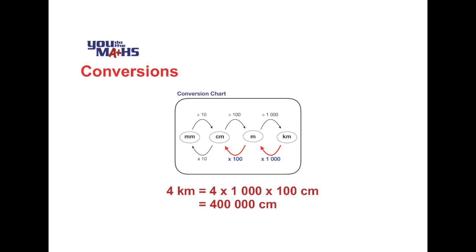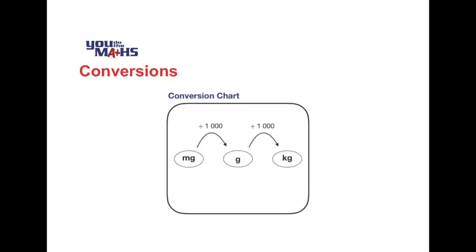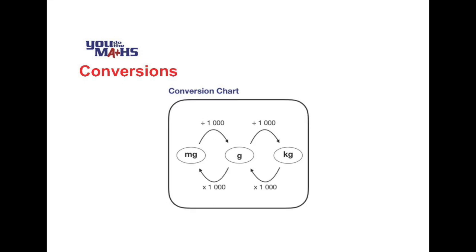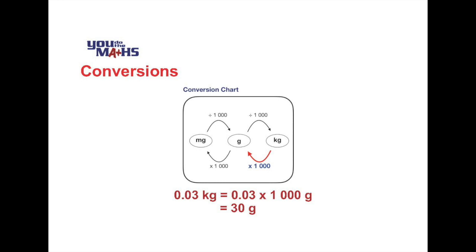This conversion chart can be used for other types of units. Here we have different units of mass: milligrams, grams, and kilograms, again going from a very small unit to a larger unit. The conversions are simpler because in both cases they involve 1000 — moving left to right we divide by 1000, and moving right to left we multiply by 1000. For our example, we need to convert 0.03 kilograms to grams. Going from kilograms to grams, we multiply by 1000, so 0.03 × 1000 equals 30 grams.